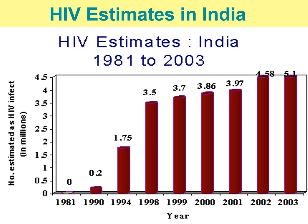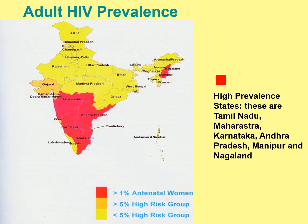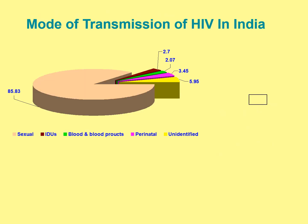There is an increased number of orphans. This is a table regarding estimates from India from 1981 to 2003 for number of people infected with HIV. This is the adult HIV prevalence in India — the red states show that there is a high prevalence of AIDS in these regions. Mode of transmission would primarily be sexual, against a few percentage for the other routes of infection.